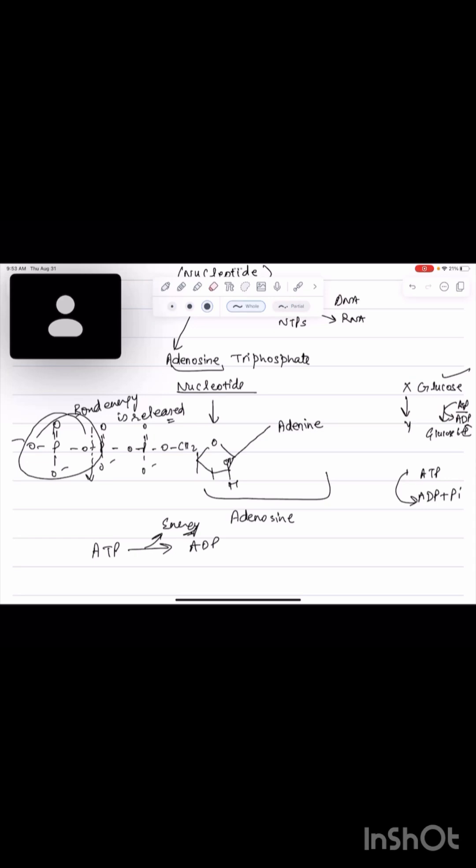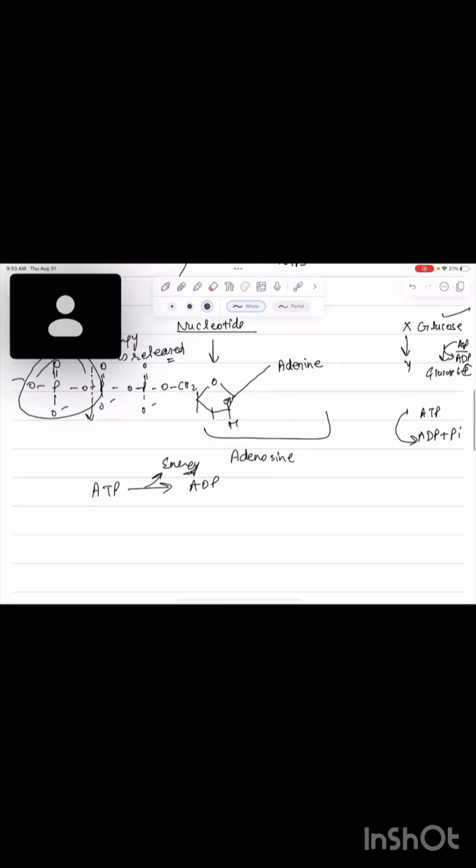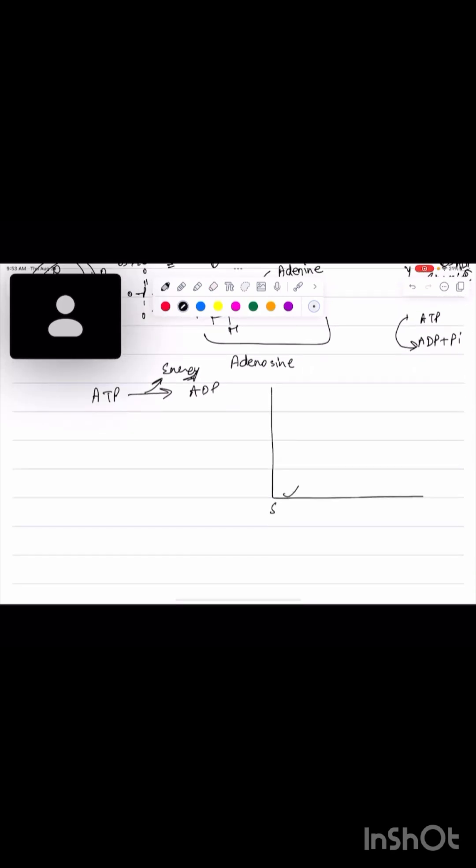I'm still kind of confused on how the endergonic reaction has to do with the ATP. Okay, so see what happens. Assume that the substrate here is glucose. Glucose has to convert to glucose-6-phosphate, that is the product of this reaction.